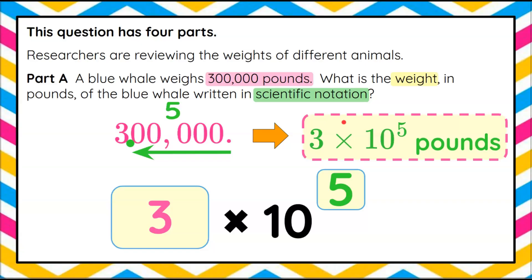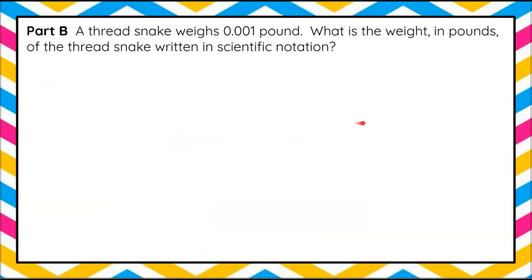All right, let's look at part B. Part B says that we have a thread snake that weighs 0.001 pound — that's one one-thousandth of a pound. What is the weight in pounds of the thread snake written in scientific notation? Here's where you pause, do your best work, and then come back to see mine.